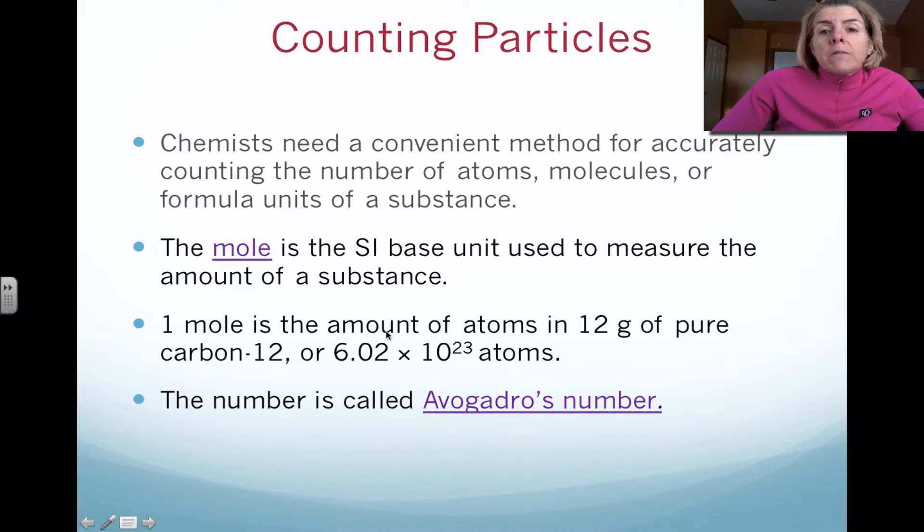Chemists needed a convenient way to count the number of atoms. And please remember, atoms are very tiny. So because they're very tiny, the amount is huge. So when you look at a mole, please note that we're looking at 6.02 times 10 to 23rd atoms. So what they decided is that if you have 12 grams of pure mass number 12 carbon, it should have 6.02 times 10 to 23rd atoms. And they named this number in honor of a chemist by the name of Avogadro. So we call this Avogadro's number.